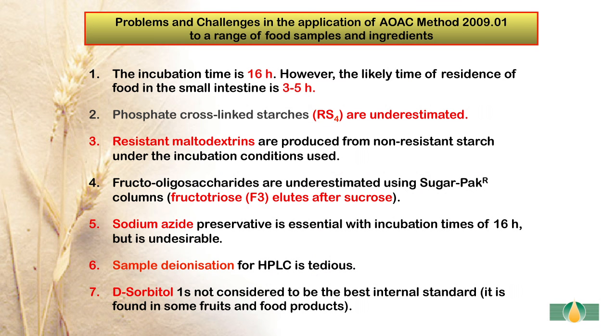The problems and challenges faced in the application of AOAC method 2009.01 to a range of food samples and ingredients are listed below. First, the incubation time is 16 hours, however the likely time of residence of food in the small intestine is just 3 to 5 hours. Secondly, phosphate cross-linked starches RS4 are underestimated. Thirdly, resistant maltodextrins are produced from non-resistant starch under the incubation conditions used. Fourth, fructo-oligosaccharides are underestimated using the sugar pack HPLC columns.